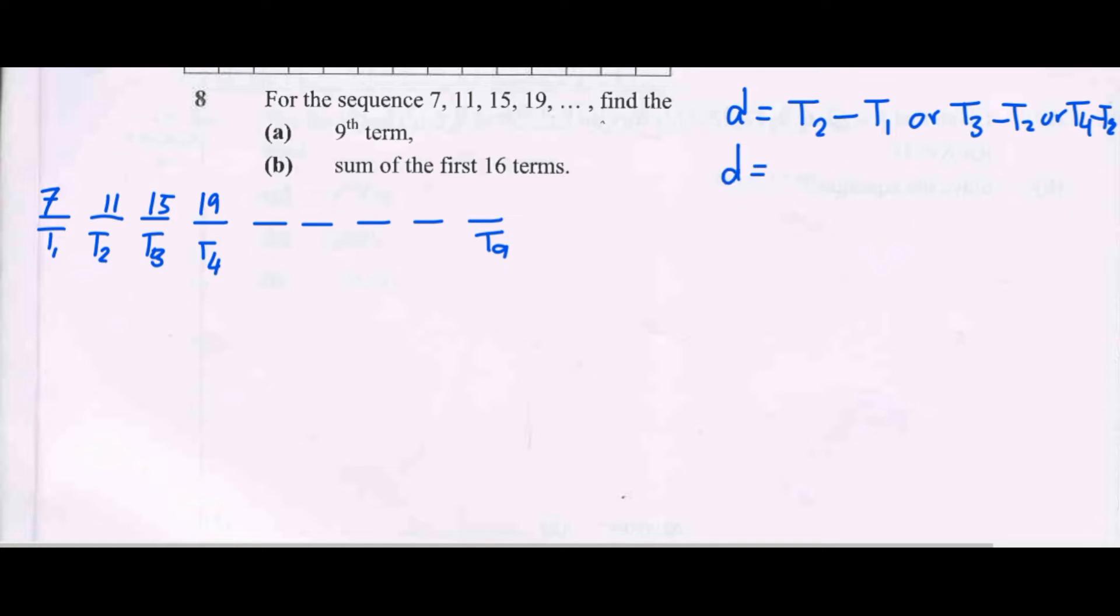So the second term is 11 minus 7 giving us 4, or the third is 15 minus 11, still 4, or 19 minus 15, still 4. To simplify, to find common difference you subtract the second term minus the first term, or the number in front minus the number on the back side.